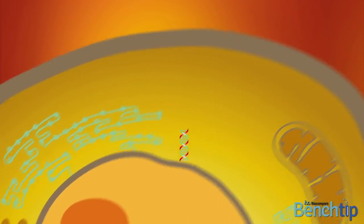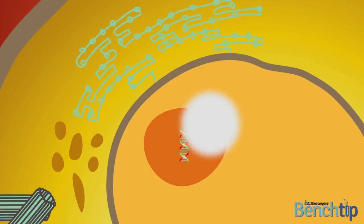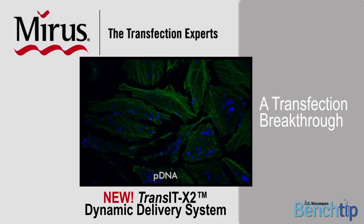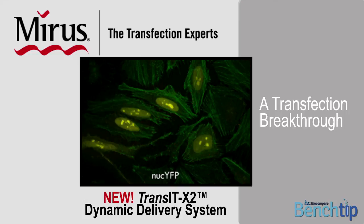The new TransIT-X2 Dynamic Delivery System from Mirus Bio is an advanced non-liposomal polymeric system that enables superior broad-spectrum transfection of plasmid DNA and or siRNA over liposomal methods.